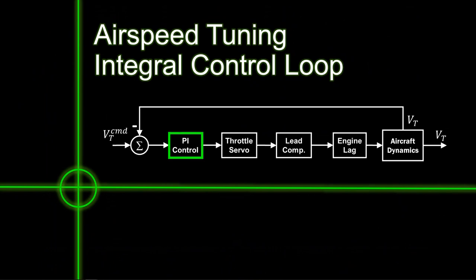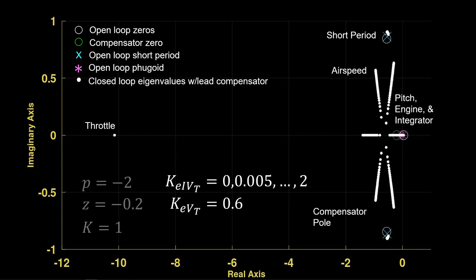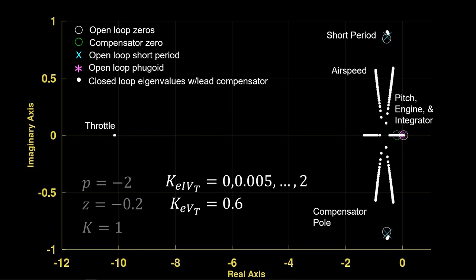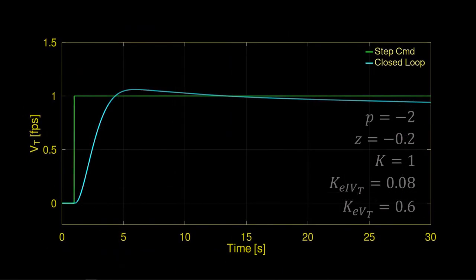Integral loop: as the integral gain increases, some interesting things happen. We select an integral error gain of 0.08, which shows reasonable damping in the real-imaginary plane. In the time domain, the closed-loop step response looks good. Note the unstable pitch pole — recall it has a time to double of over 40 seconds — this is controlled with the glide slope loop, so it's not a concern here.